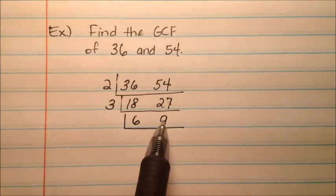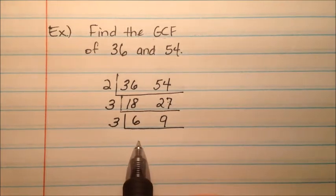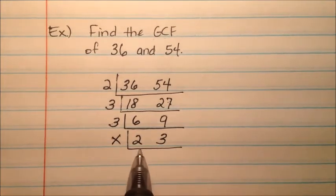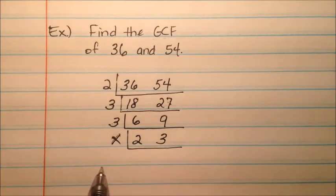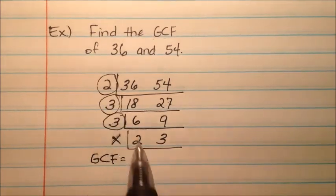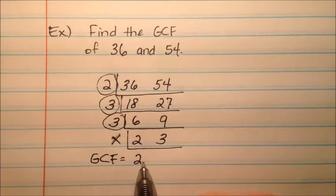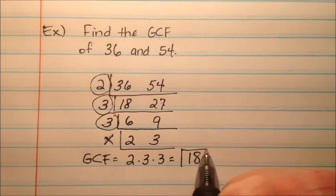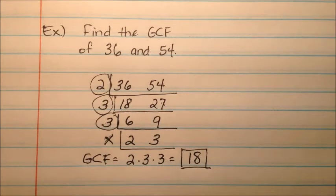Is there a number that will divide both 6 and 9 evenly? Sure, 3 will. 6 divided by 3 is 2, and 9 divided by 3 is 3. And 2 and 3 — nothing else will divide out of there, so we're done. My GCF will be the product of 2, 3, and 3 — so 2 times 3 times 3 equals 18. The greatest common factor of 36 and 54 is 18.